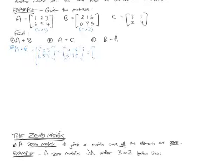So the intermediate step is finding the sum of the elements in the same position. So in the top left, you have 1 plus 2. In the middle at the top is 2 plus 1. On the right at the top, it's 3 plus 6. So we've done that top row. The bottom row is going to be 6 plus 0. The middle in the bottom row is going to be 5 plus 3. And the right in the bottom row is going to be 4 plus 5.